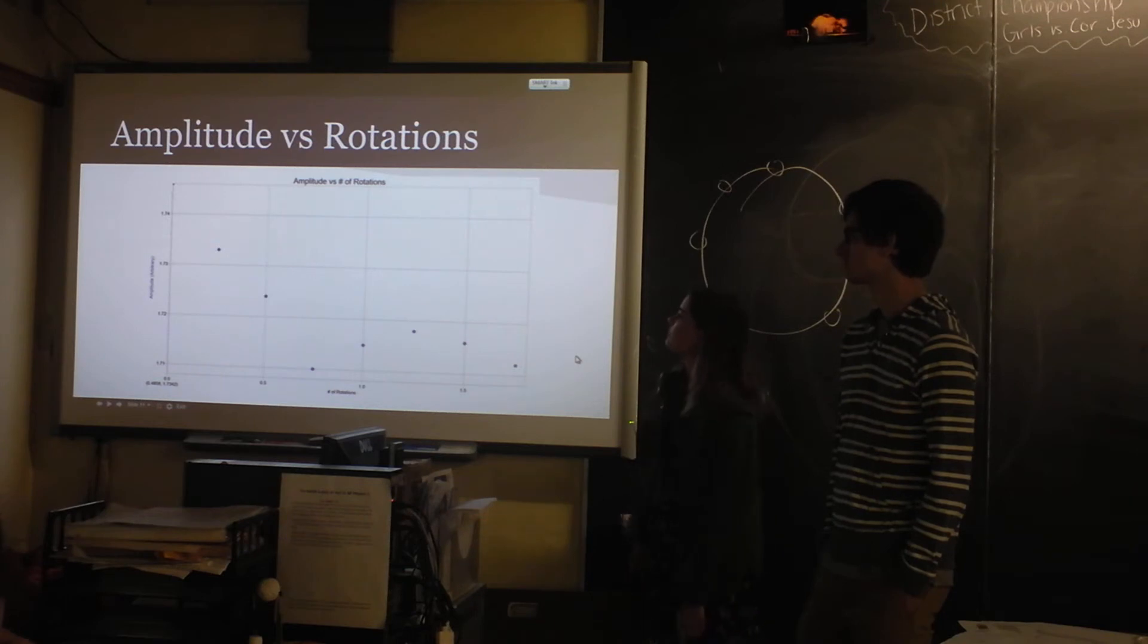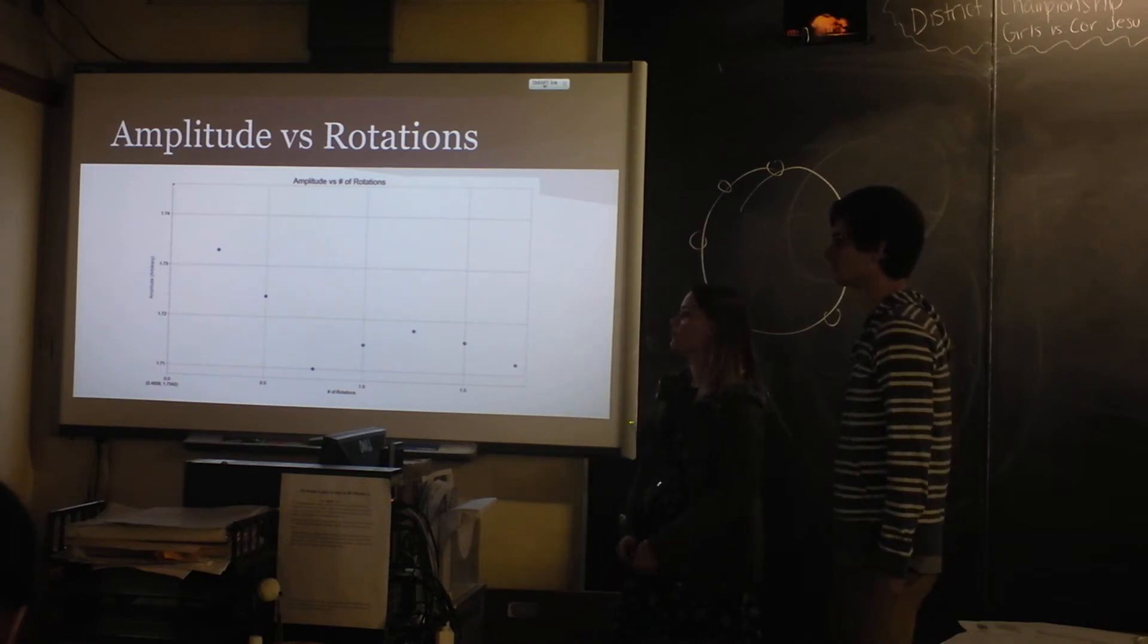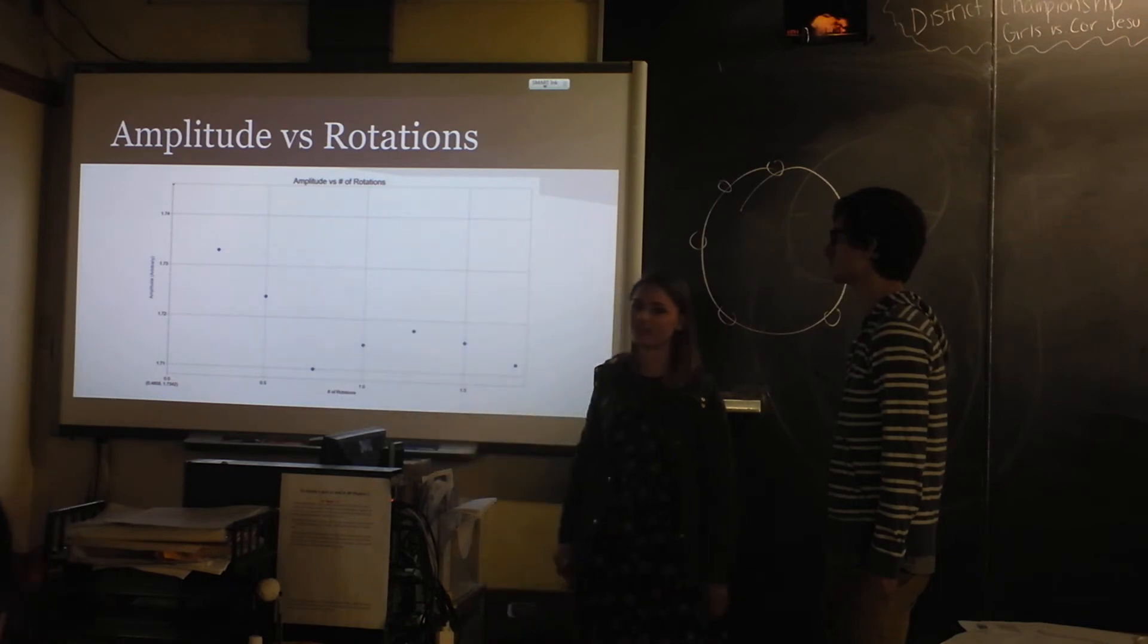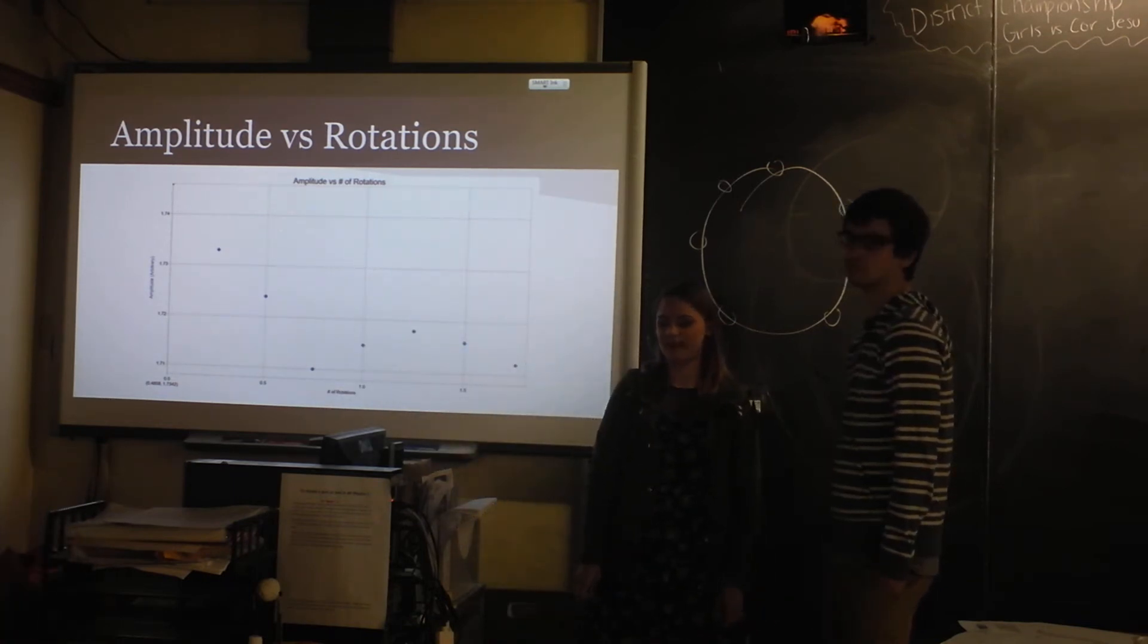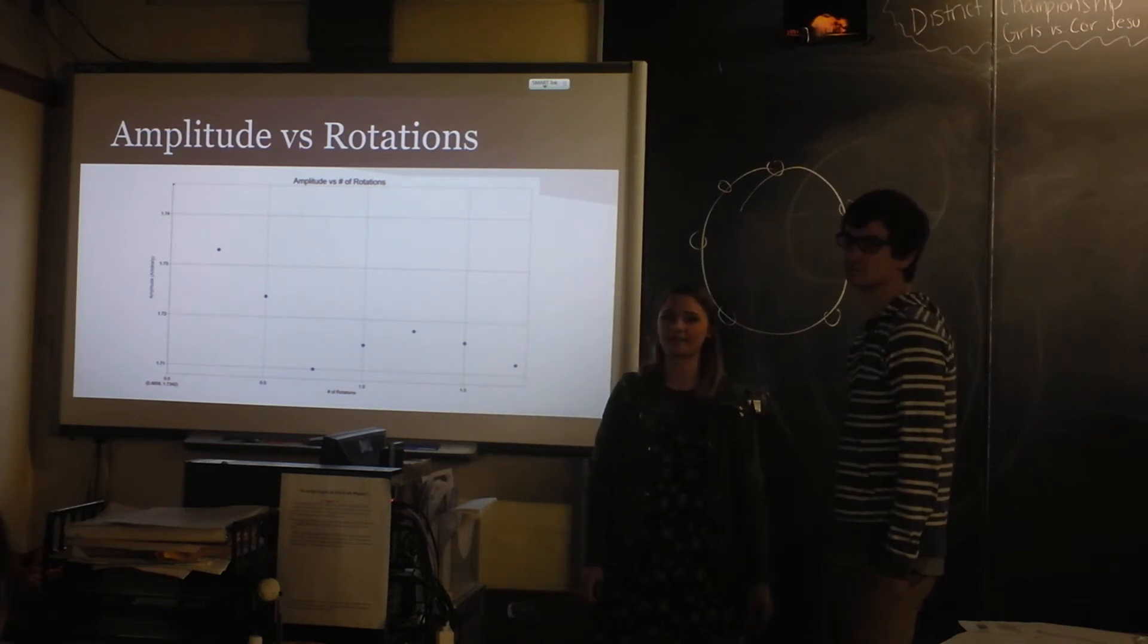So this is our amplitude versus rotations. And we concluded that there wasn't really a correlation between amplitude and number of rotations. Because if you look at the scale on the side, it really didn't change that much. It looks like it's kind of going down. But we did an exploration lab before to see, when you hit it harder, what happens. And when you hit the snare harder, the amplitude increases. So since we weren't really changing how loud we played the drum, we concluded that amplitude didn't really change.